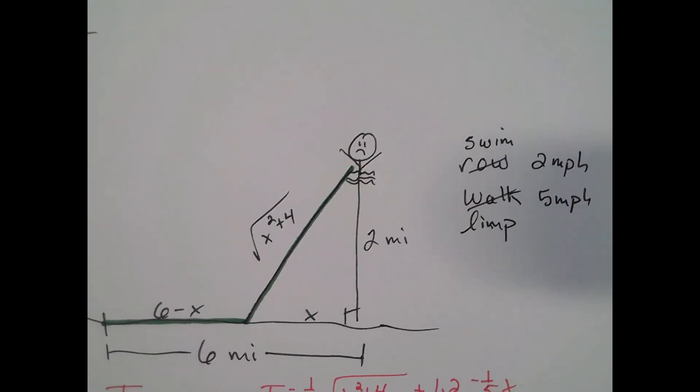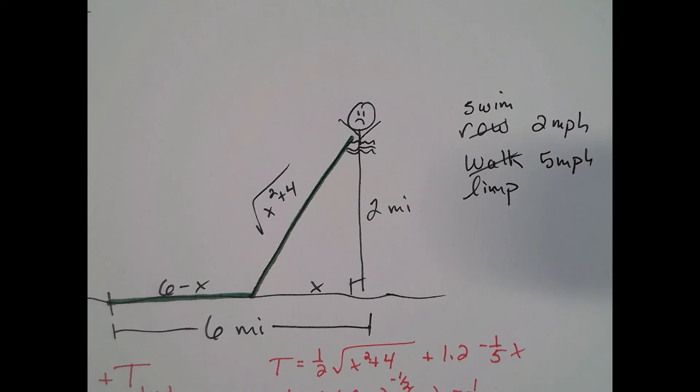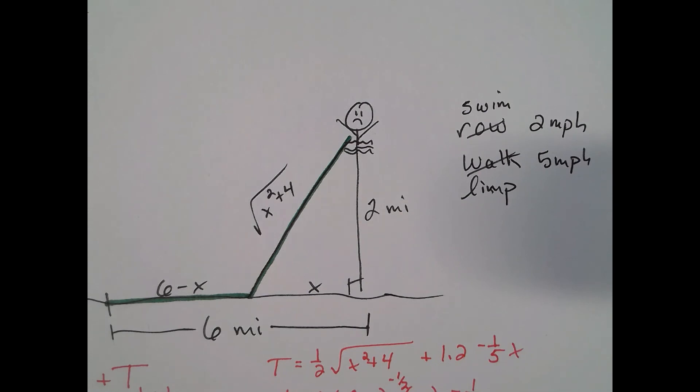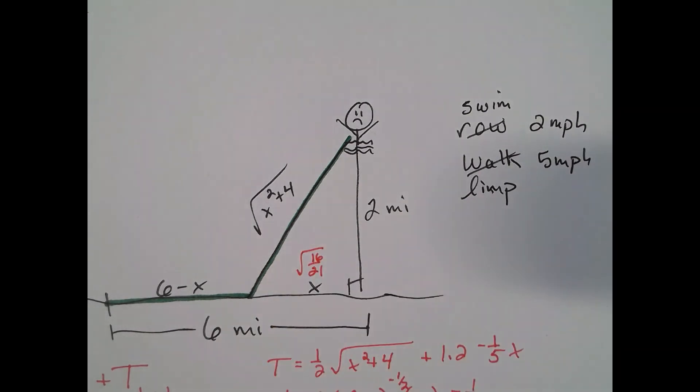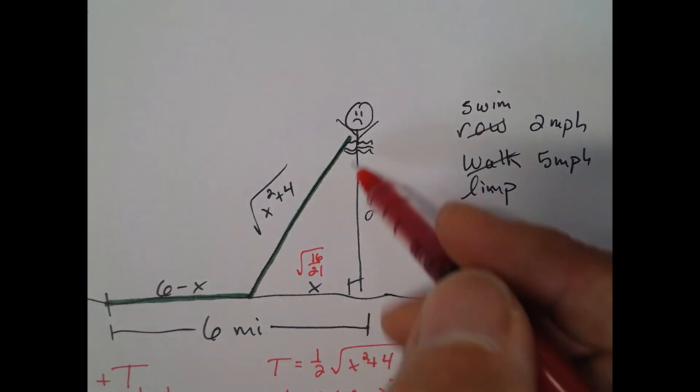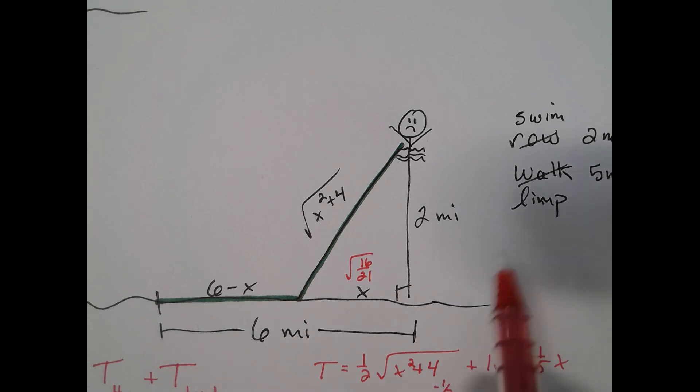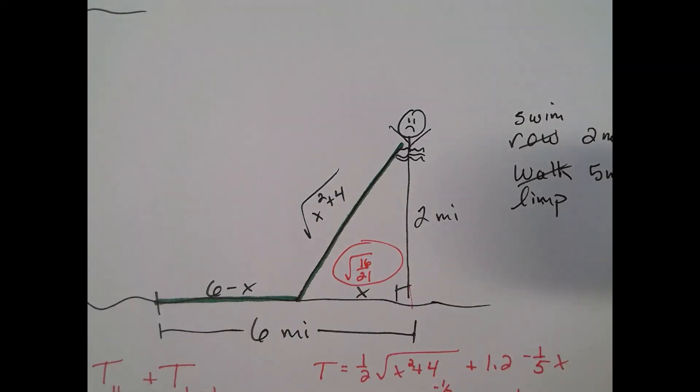What is it that we asked? We were asked where should she land her boat to reach the village in the least amount of time. She should go exactly the square root of 16 over 21 miles to the left or toward the hospital from where her perpendicular distance from shore is, if she wants to survive. And we hope that she knows calculus in order to live.